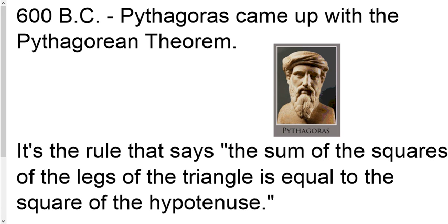And basically he came up with this rule that said the sum of the squares of the legs of the triangle is equal to the square of the hypotenuse. And that probably means nothing to you at this point. But by the end of the day, hopefully you'll know exactly what he's saying and you'll agree with him.